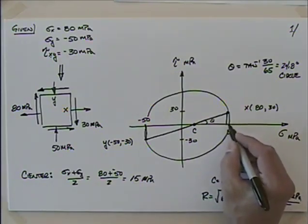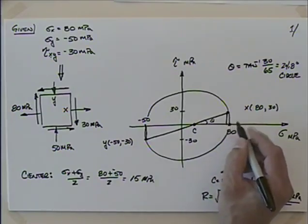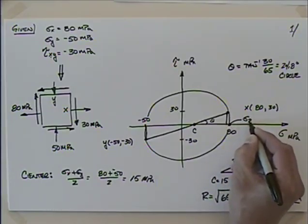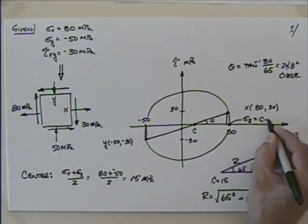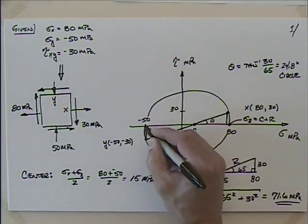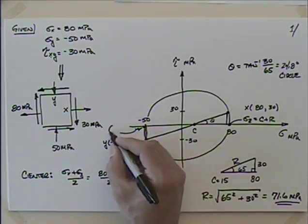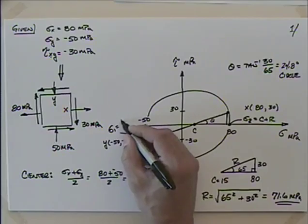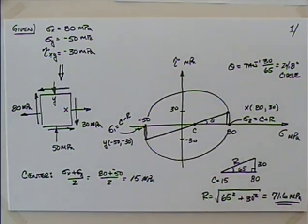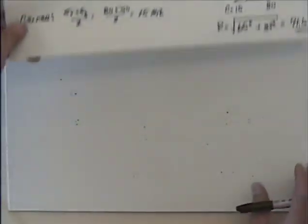Our stresses are going to be slightly larger. I can say that this point is sigma 2, which is the center plus the radius, and this point out here is sigma 1, which is the center minus the radius. Those will be just a little bit smaller than minus 50 and larger than 80.